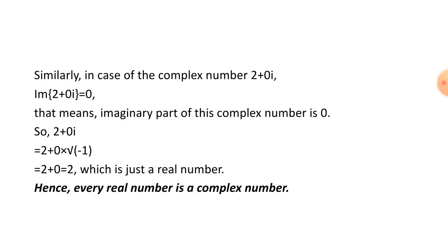Similarly, consider the complex number 2 + 0i. Here the imaginary part is 0. So 2 + 0i = 2 + 0 × √(−1) = 2 + 0 = 2, which is a real number. So we can also conclude that every real number is a complex number.